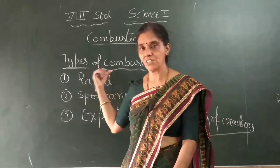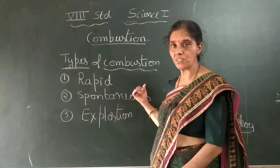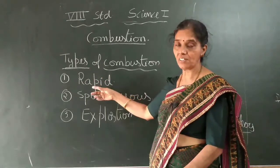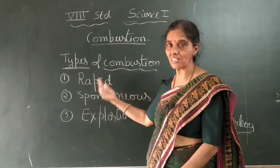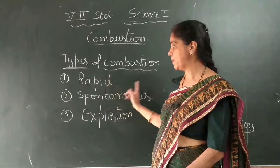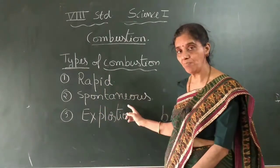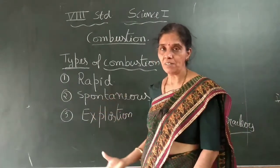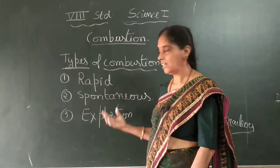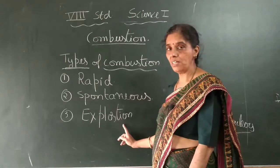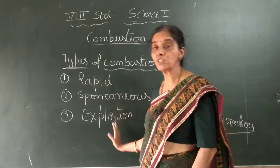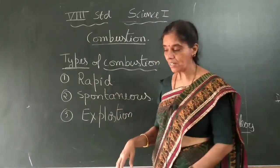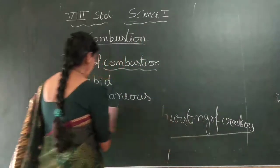To summarize: in rapid combustion, you use some material to ignite the combustible material and it continuously burns. In spontaneous combustion, we cannot see an apparent reason — the material suddenly bursts into flame. In explosion, along with heat and light, sound is also produced and a lot of smoke is given out. These are the three types of combustion we can see in our day-to-day life.